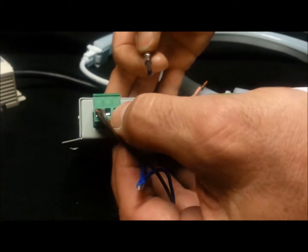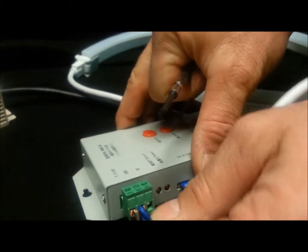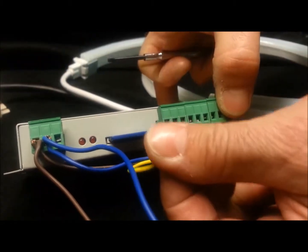The brown wire goes into the positive port, the blue wire goes into the ground port, and the yellow wire will connect to the data port.